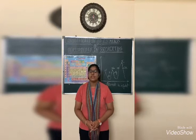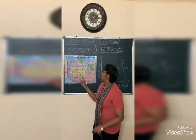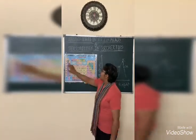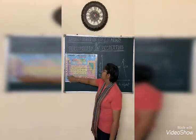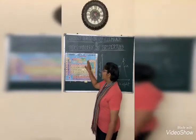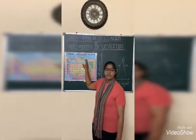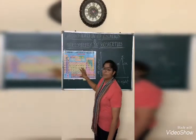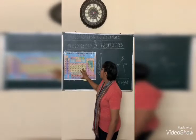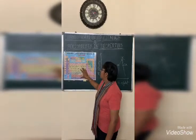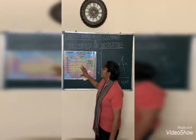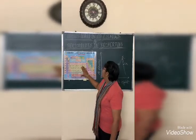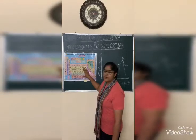Periodic Table is a long form of Periodic Table. You can see here there are 7 Periods and 18 Groups. This Periodic Table was not made early — it was made by several scientists who gave their contribution to form this long form of Periodic Table.